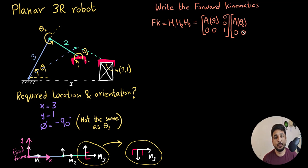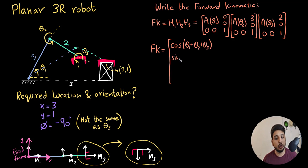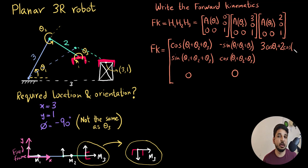So writing out the forward kinematics, it is comprised of three homogeneous transforms h1, h2 and h3. The first homogeneous transform has zero displacement and a rotation matrix with the rotation angle theta 1. The second homogeneous transform has the displacement three units in x, zero in y and a rotation angle of theta 2. And the third has a rotation angle of theta 3 with two and zero as the displacement.